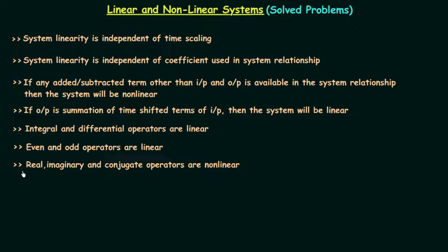In the last lecture we found that real, imaginary, and conjugate operators are nonlinear operators. Till now we have checked the linearity of 7 operators: integral, differential, even, odd, real, imaginary, and conjugate. Out of these 7 operators, only 3 operators are nonlinear and the rest 4 are linear.